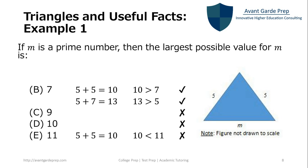Now let's look at answer choice b. We can look at the two sides and compare them to 7. So we have 5 plus 5, the two sides, that equals 10. 10 is greater than 7. And if we add 5 and 7, we get 13, which is greater than 5. So both of these check out, and 7 would be the largest prime number that m could be. Answer choice a is also prime, but it's less than 7, so we wouldn't want to choose that.